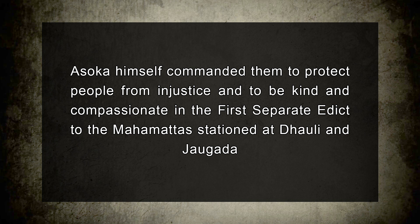It is unknown if Ashoka's successors gave the Dhamma the same priority he did despite his personal exhortation. The existence of a sizable group of state representatives known as Dhamma Mahamattas was another aspect of Dhamma's political significance. According to some historians, they rose to great power and became oppressive during the second half of Ashoka's rule. Ashoka himself commanded them to protect people from injustice in the first separate edict to the Mahamattas stationed at Dhauli and Jaugada.